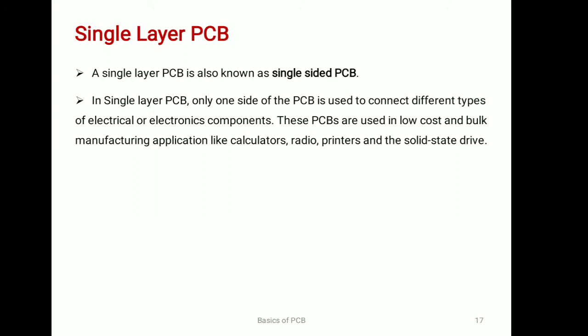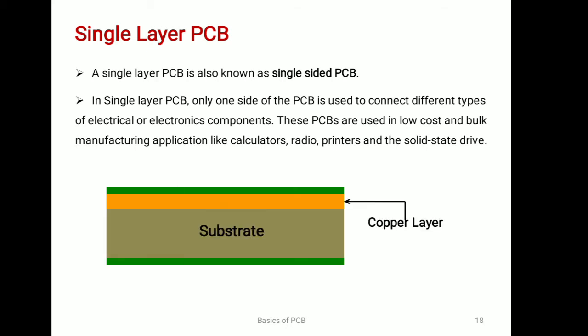The first one is single layer PCB. It is also known as single sided PCB, where only one side of the PCB is used to connect different components. These are simple, low cost and mostly used PCBs. We can see in the diagram that only one side of this PCB is coated with a copper layer, and then a composite solder mask is used to protect the PCB against oxidation, with a silk screen layer to mark out all the components on the PCB.